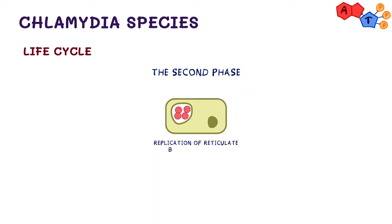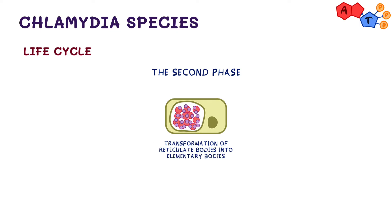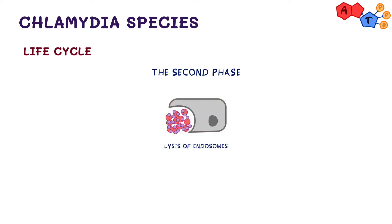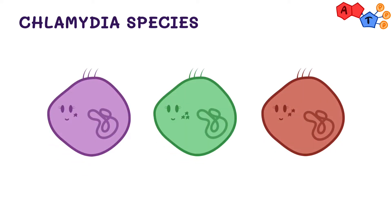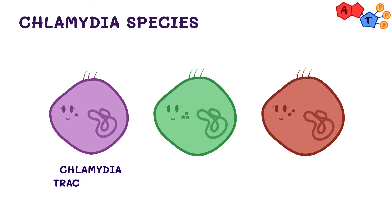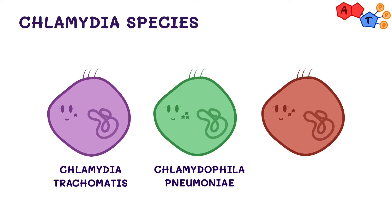The second phase starts with the replication of reticulate bodies in cells by fission, and transformation of reticulate bodies into elementary bodies. The cell becomes too full, which results in lysis of endosomes and release of newly formed elementary bodies to exit the cell, where they attach to other cells to start a new cycle. There are three Chlamydia species pathogenic to humans: Chlamydia trachomatis, Chlamydophila pneumoniae, and Chlamydophila psittaci.